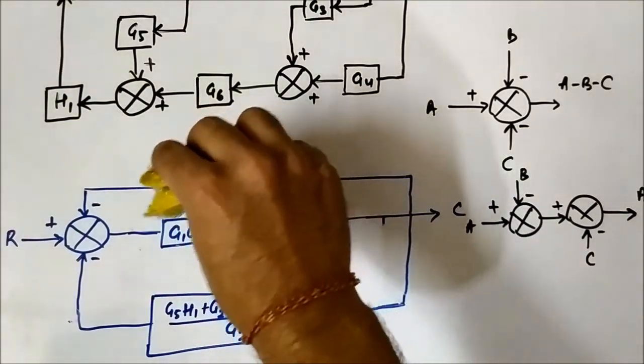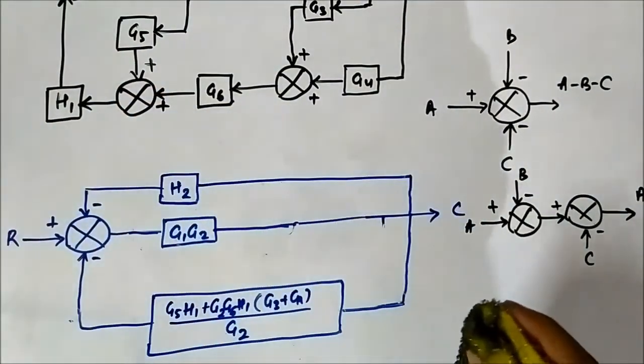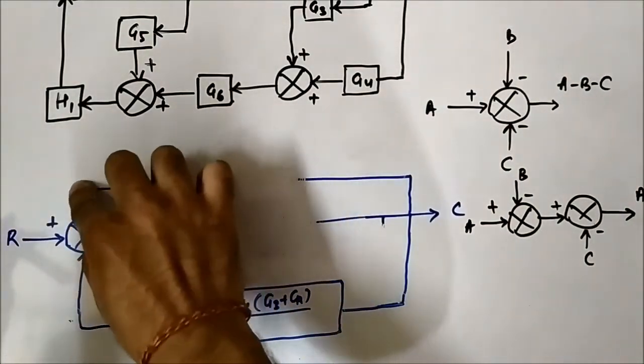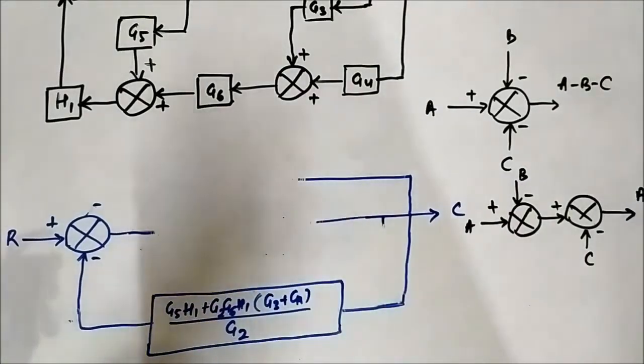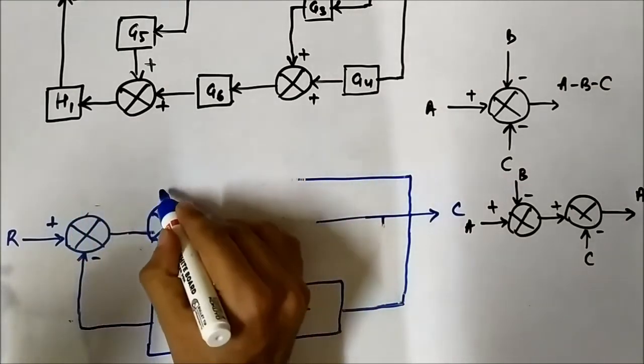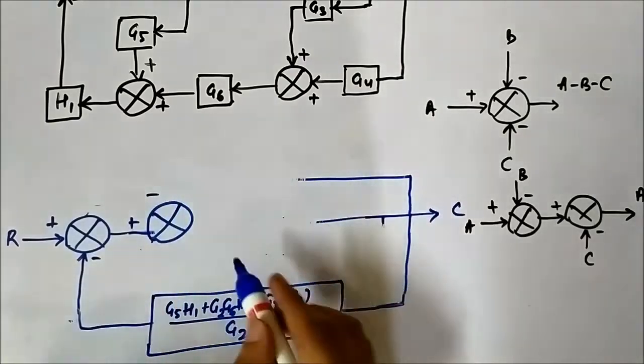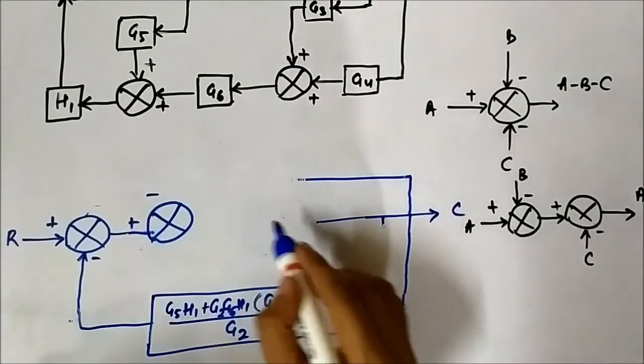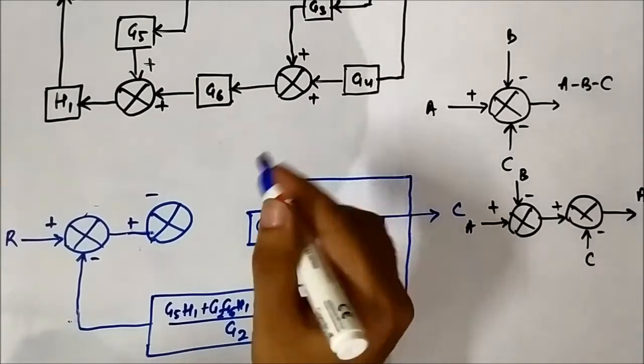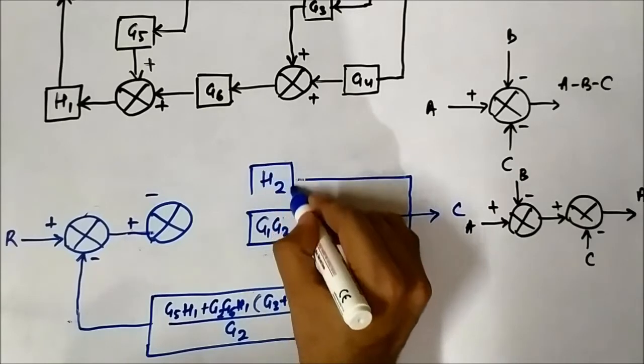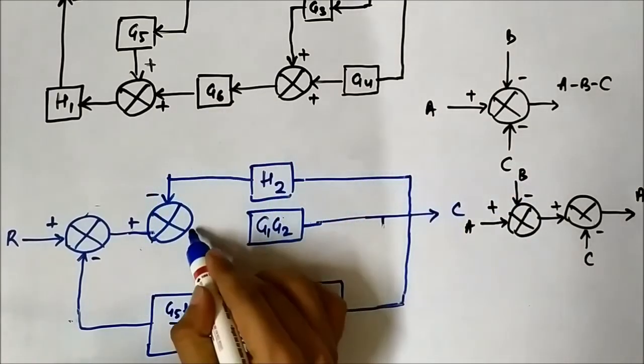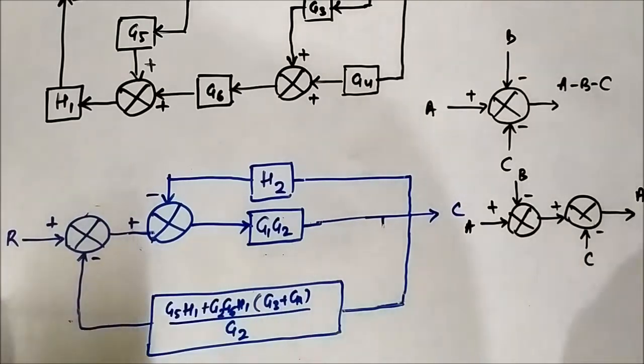We will split this summer. Plus, this is minus. This is G1 G2, and here in the feedback path H2, like this. This is one part and this is the other part. We have split this summer.